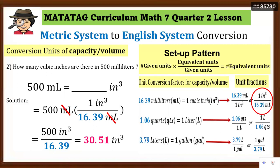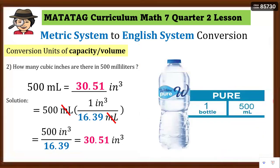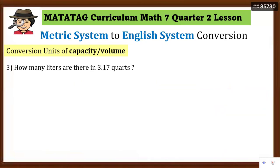So 30.51 cubic inches is equivalent to 500 ml, rounded to 2 decimal places. In real life, when we buy Wilkins or any bottled water daily — this 500 ml bottle costs 18 pesos now, so don't waste water!